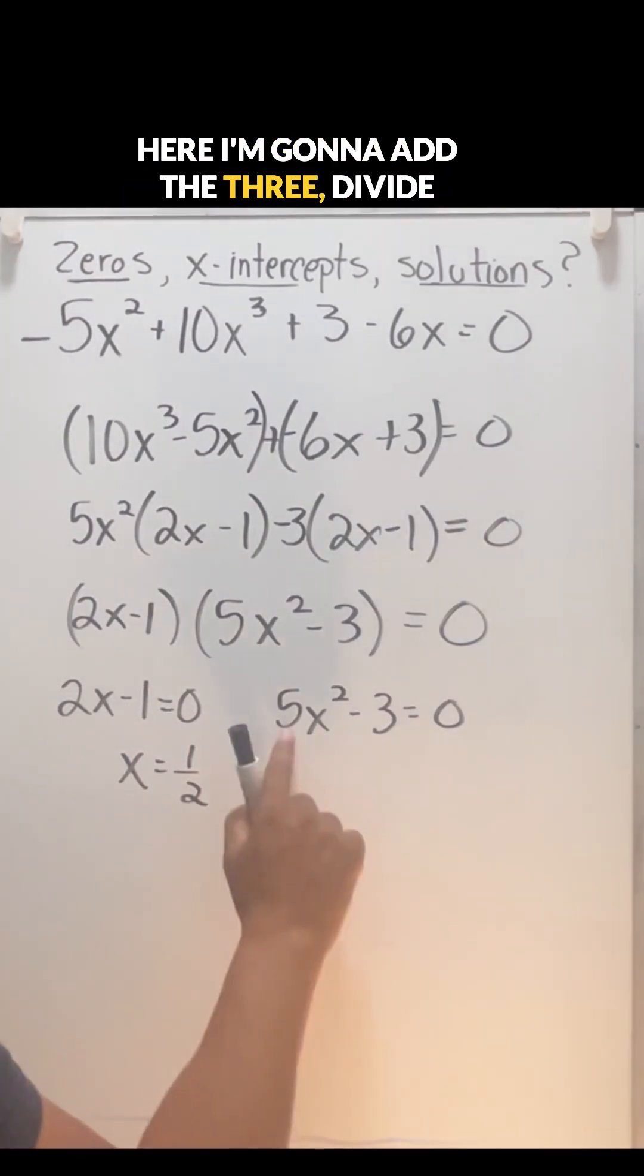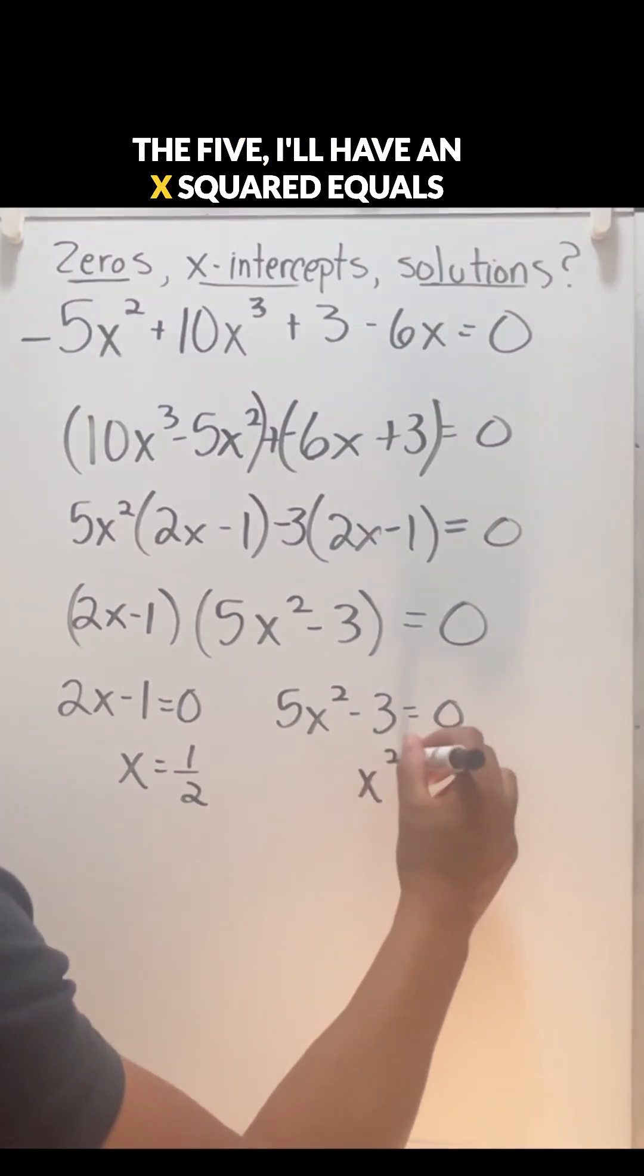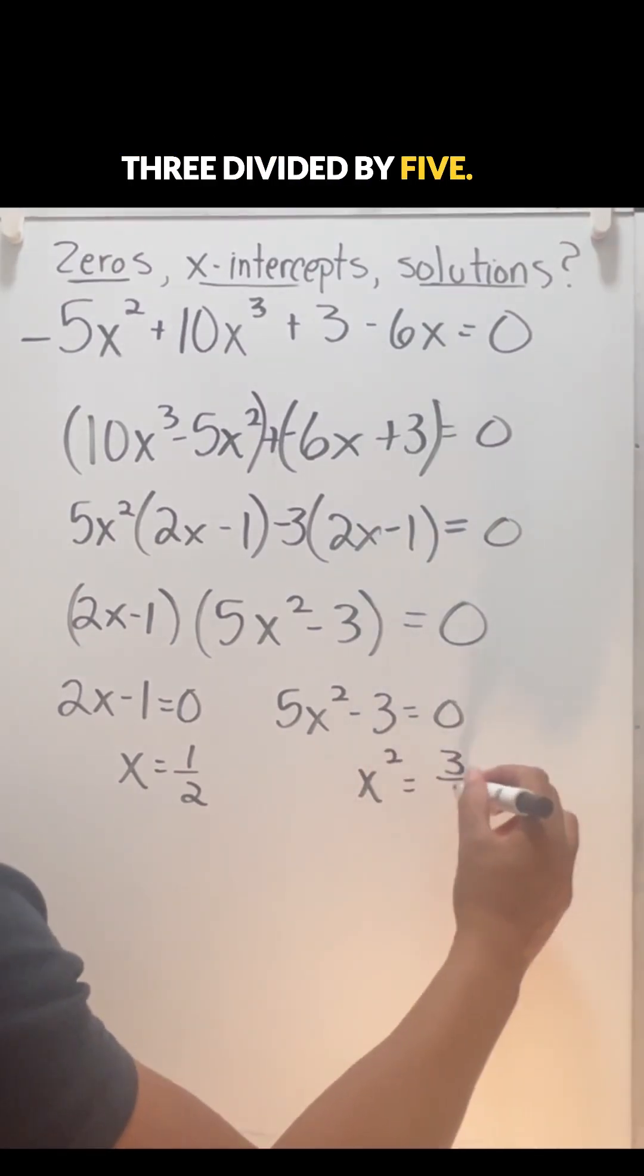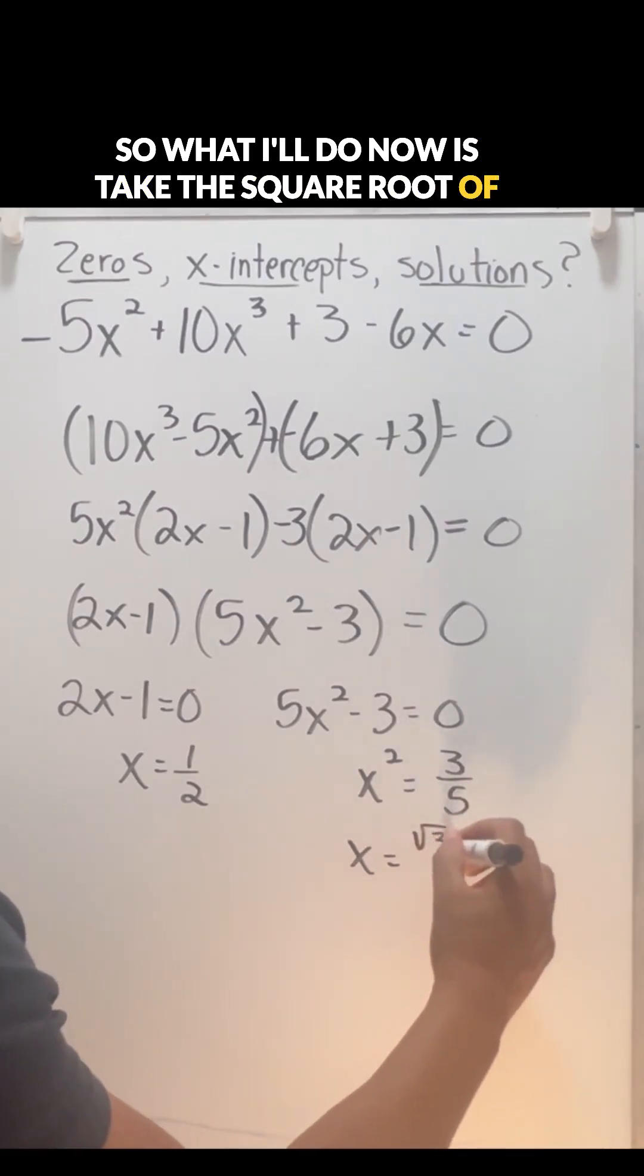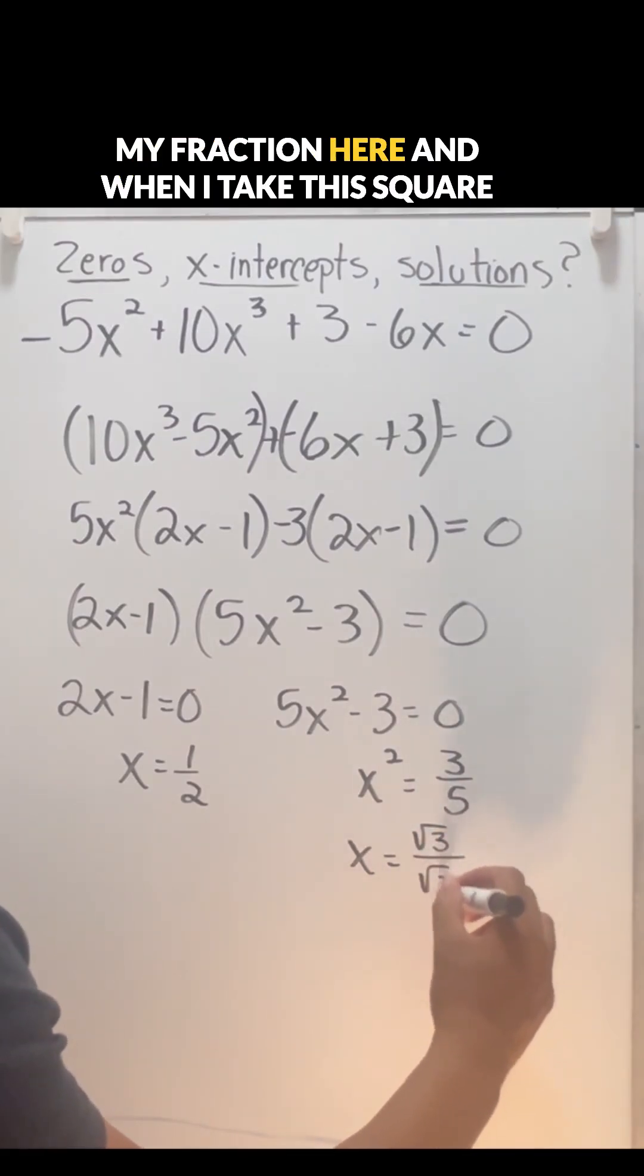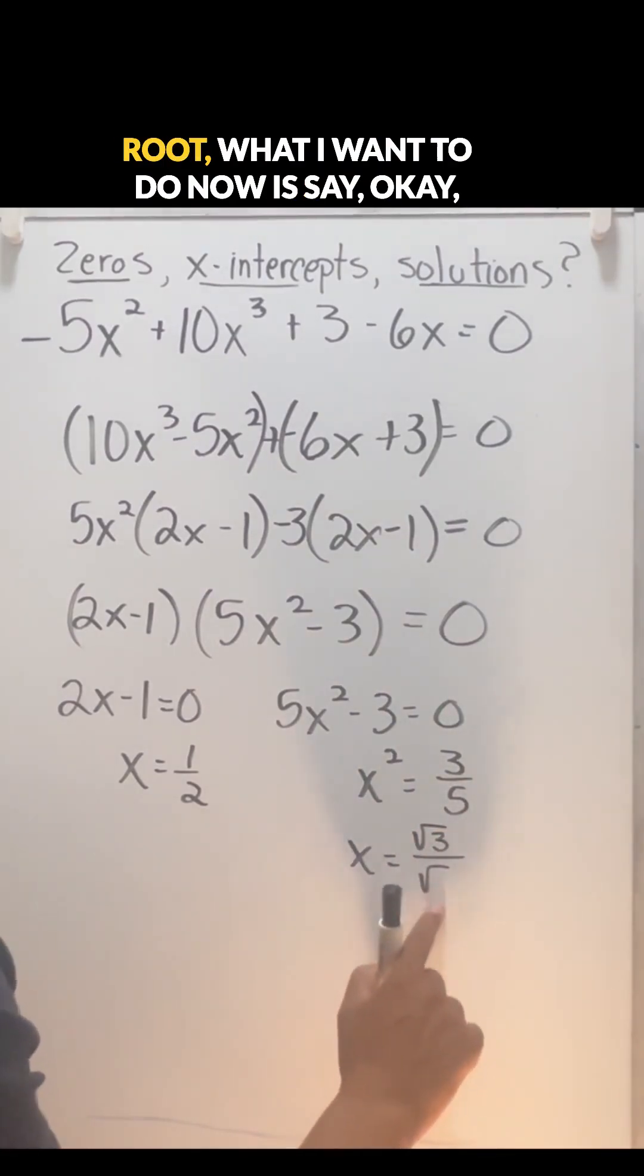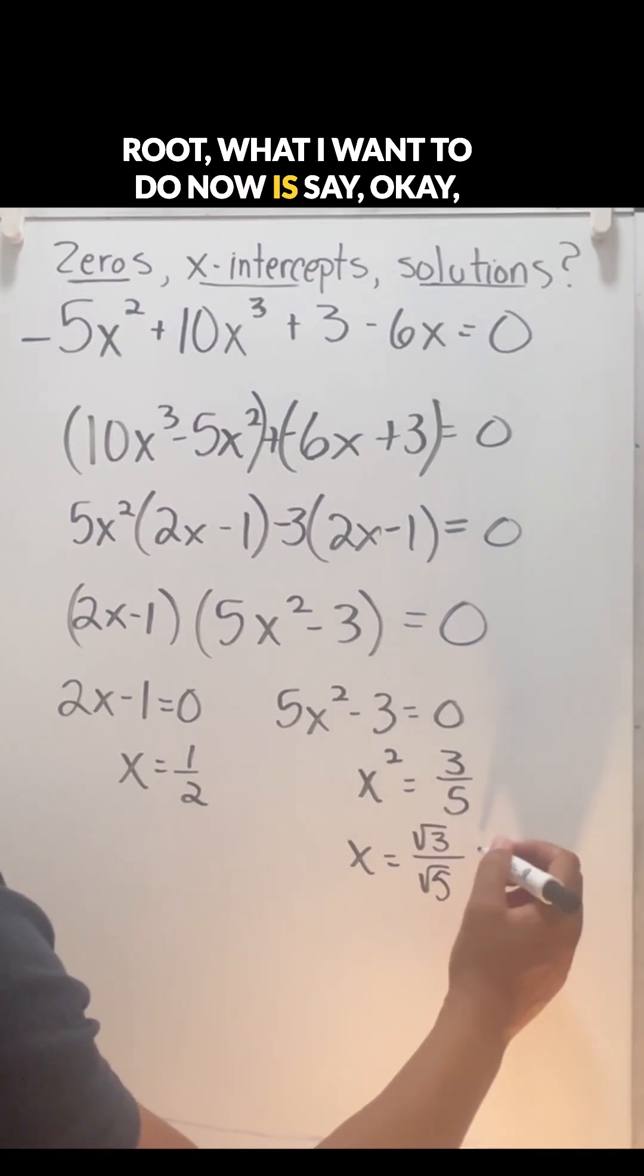Here, I'm going to add the three, divide the five. I'll have x squared equals three divided by five. Then I need to take the square root. So what I'll do now is take the square root of my fraction here. When I take the square root, what I want to do now is say okay...